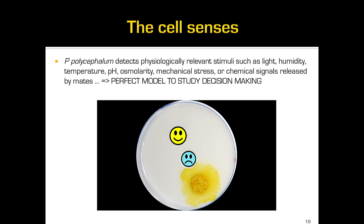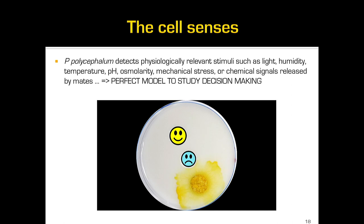Slime molds are pretty interesting when you want to study decision making because they sense a lot of different stimuli, such as light, humidity, temperature, osmolarity, mechanical stress, chemical signals, and more. It's a very nice organism to study decision making.